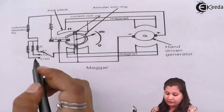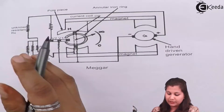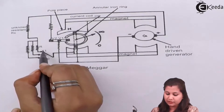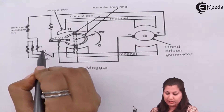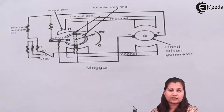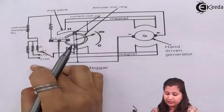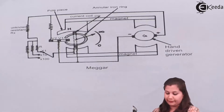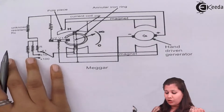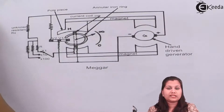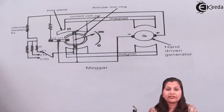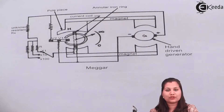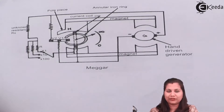The resistances connected here allow us to change the scale ranges. If it is on the ×1 setting it means the range of resistances is very small; if it is on the ×200 setting then the range of resistances is very high. In this video we studied the measurement of high resistances using the Megger method. I hope this topic is clear to you, thank you.